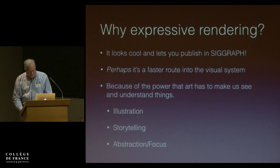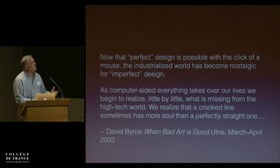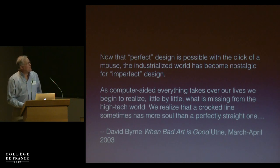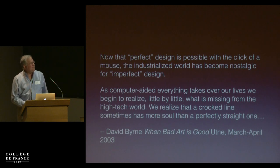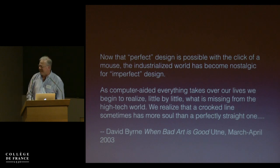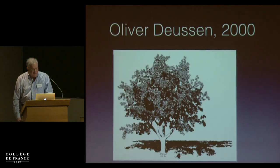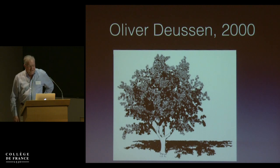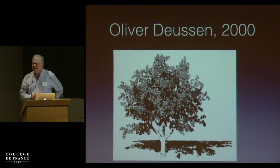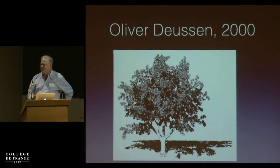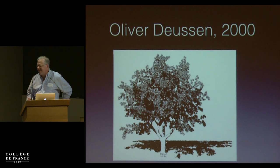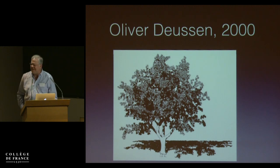The other thing is something David Byrne remarked, which I really like. He says: 'Now that perfect design is possible with the click of a mouse, the industrialized world has become nostalgic for imperfect design. As computer-aided everything takes over our lives, we begin to realize what's missing from the high-tech world. We realize that a crooked line sometimes has more soul than a perfectly straight one.' There's a nice tree made by Oliver Deussen. I think this picture of a tree communicates more about a tree than a photograph might — somehow you see more tree-ness there than you might in a photograph.